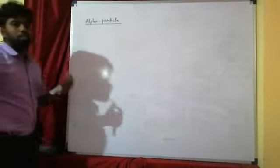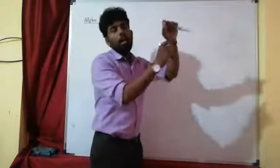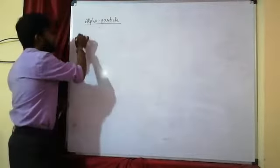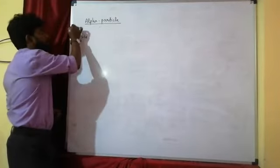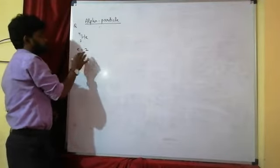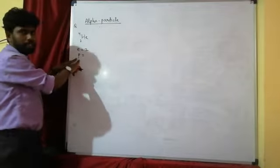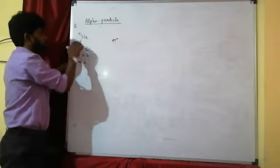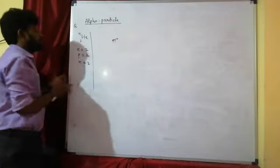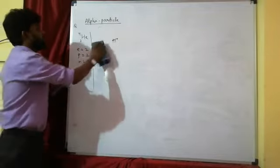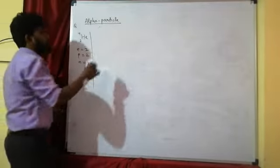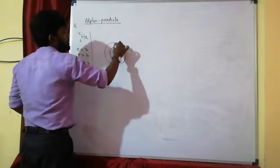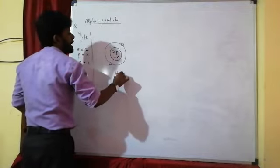Just as a proton is derived from a hydrogen atom, alpha is derived from a helium atom. Helium has atomic number 2 and mass number 4, meaning it has 2 protons, 2 neutrons in the nucleus, and 2 electrons orbiting outside.